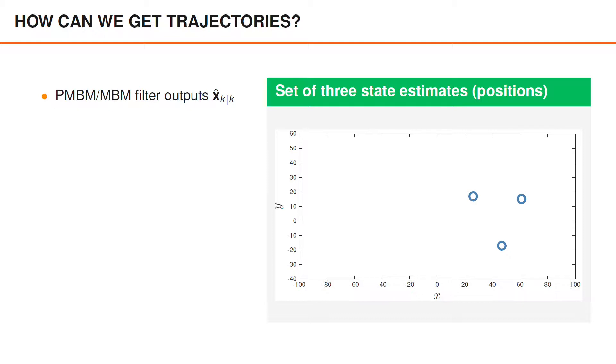In the estimation in the PMBM filter and the MBM filter, we compute a set of estimates. We can say that this is the output from the filter at time k, the set of estimates. On the right, we have illustrated a set of three estimated objects, specifically their 2D positions.